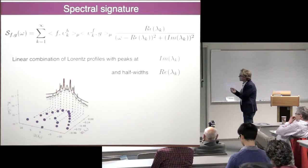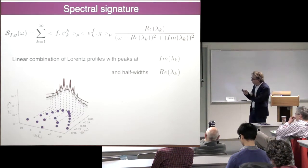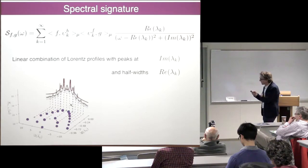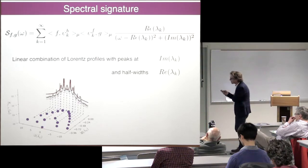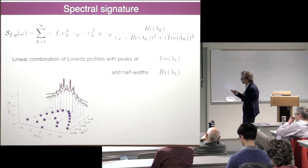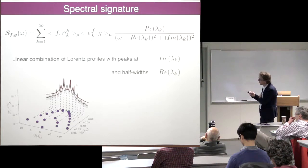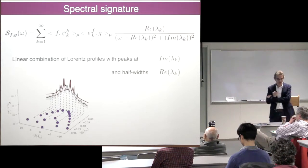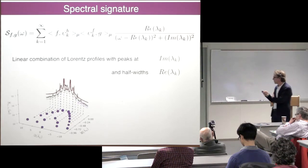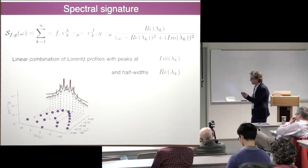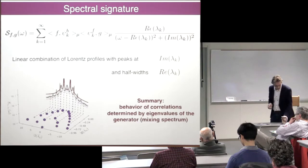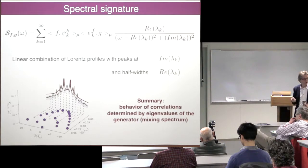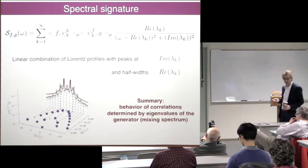So the spectrum — this is a picture of an example — once you compute the eigenvalues here, these are the real and imaginary parts of this transfer operator. You have an approximation — the red ones are, for this example, the peaks in the spectrum computed through this formula — and you see that every peak can be interpreted as an eigenvalue of this generator. Also, the half-width can be interpreted in terms of the real part of this eigenvalue. The summary is: once you get a good approximation of the eigenvalues of the generator, you have quite some information on the decay of correlations in the system and on the spectral peaks.